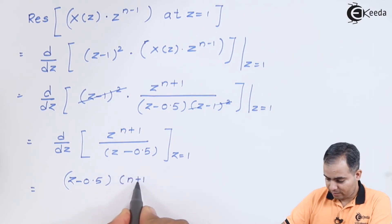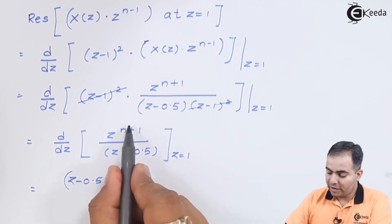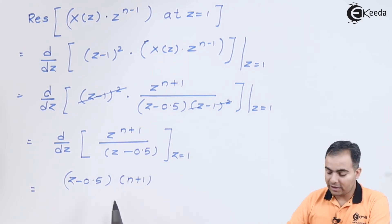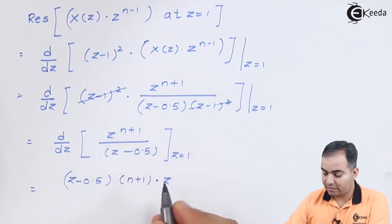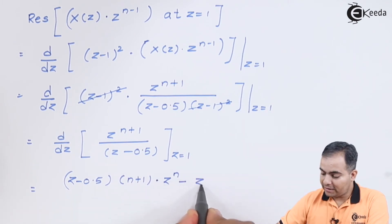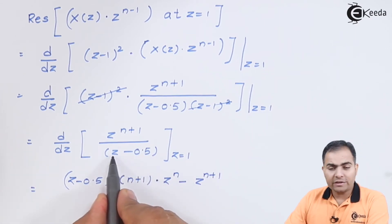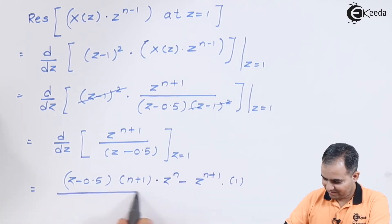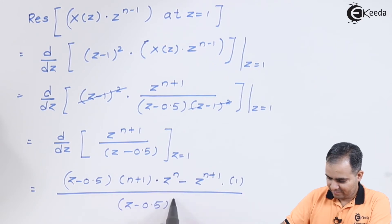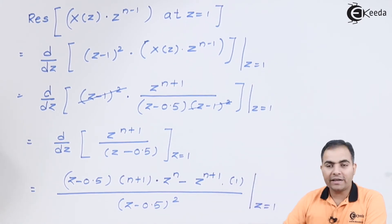The derivative of x^n is n · x^(n−1). So I write n plus 1 first and decrease the order by 1, giving Z to the power n. Then, keeping u constant, differentiate the denominator: differentiation of Z is 1 and of 0.5 is 0, so only 1 remains. The denominator is v squared, so we have Z minus 0.5 the whole square. Now substitute Z equals 1 in this equation.